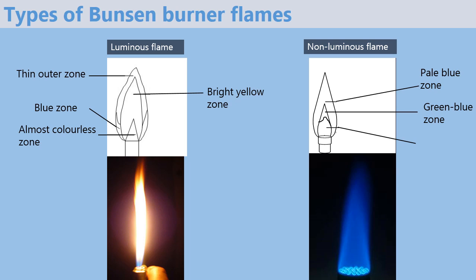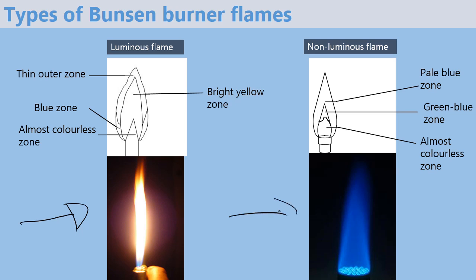Finally we have the almost colorless zone, where we have unburnt gases. That's it about the luminous and non-luminous flame. Can you try to name the parts of the luminous and non-luminous flame on these pictures? Take some time.